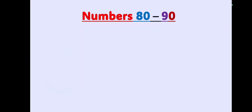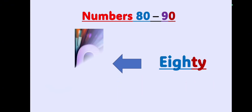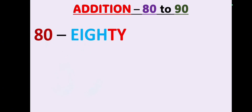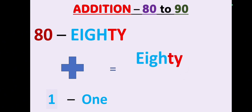We are going to learn numbers 80 to 90. 80 is spelled E-I-G-H-T-Y. We are going to learn these numbers with the addition rule. Let's write down the number 80 plus one. The simple rule: write down E-I-G-H-T-Y as it is, since any number added with zero gives you the same result. So zero plus one equals one — write down 1, which gives you 81.